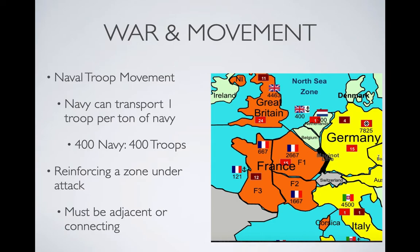The defending country can move troops in to help defend, as long as they are connected — which Bohemia-Moravia and Germany are. Now that Germany has used those troops in that battle, they cannot use them again in this turn. So if someone else were to attack Germany somewhere else, they would not be able to move any of these 7,825 troops to help defend. By the same token, during any subsequent battles by Great Britain, they cannot use this navy any longer. You can only use troops and navy once per turn. Next turn, everything starts all over again.